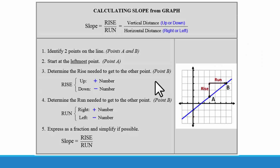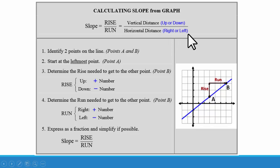In the last exercise, we were just concerned whether the slope was positive or negative. Now we are going to determine the actual number of the slope. To calculate the number of the slope, we are going to use rise over run, which is the vertical distance — the up or down distance — divided by the horizontal distance. We write it as a ratio: rise over run.